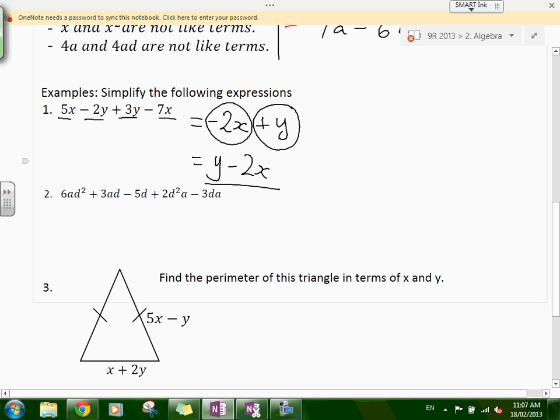Next one: 6ad squared plus 3ad minus 5d plus 2d squared a minus 3da. Which are like terms? 6ad squared plus 2d squared a. How many is that going to be? 8ad squared. Any like terms? What do we get when we have 3ad minus 3da? Zero. We don't have to write it. And then we're just left with minus 5d.